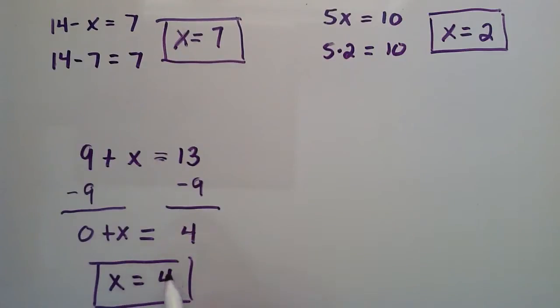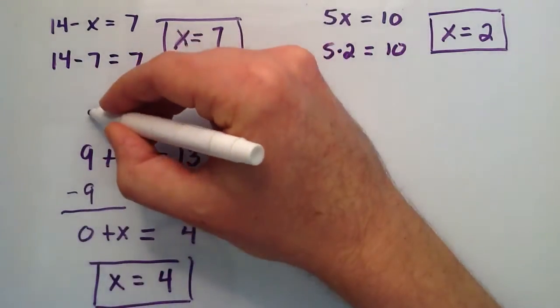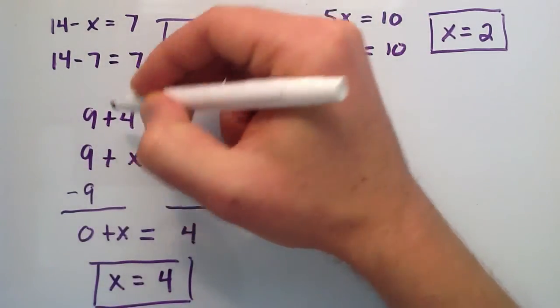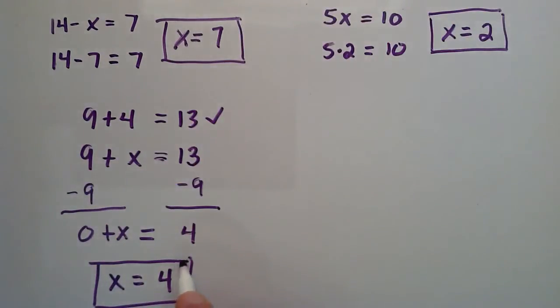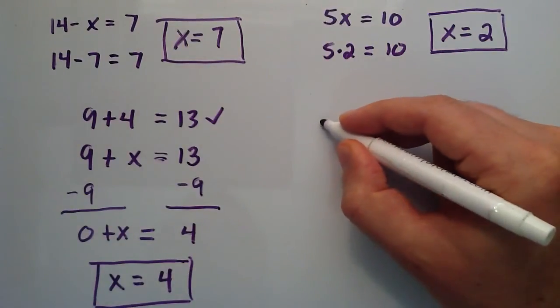x equals 4. So, we could simply rewrite this top statement: 9 plus 4 equals 13, and that's true. We went ahead and solved that one. Let's do one more problem here. This one's a little bit harder to see the answer.